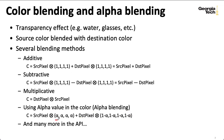If alpha is 1, then the object you're writing is entirely opaque, and you don't see anything about what was already there. If alpha is 0, then the object you're drawing is entirely transparent, and you only see what was already in the scene.